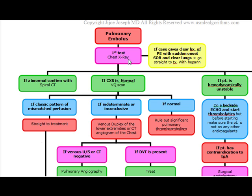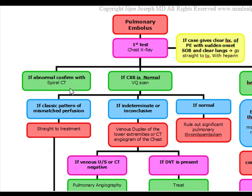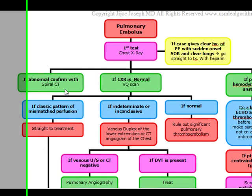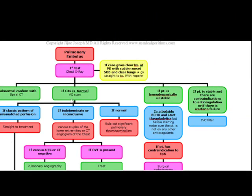Chest x-ray is usually normal, but once in a while it may be abnormal — you may actually see a wedge-shaped infarct due to the pulmonary infarct. If the chest x-ray is abnormal, which is rare, you're going to confirm this with a spiral CT. If the chest x-ray is normal, which is oftentimes the case, you're going to do a VQ scan. So: first is chest x-ray; if abnormal, confirm with spiral CT; if normal, confirm with a VQ scan.